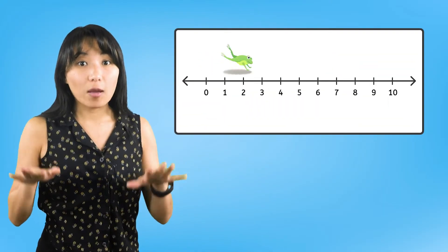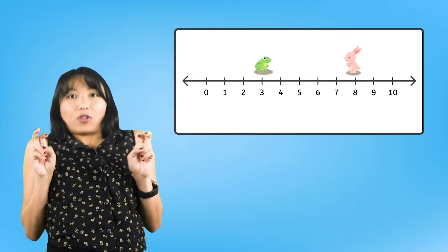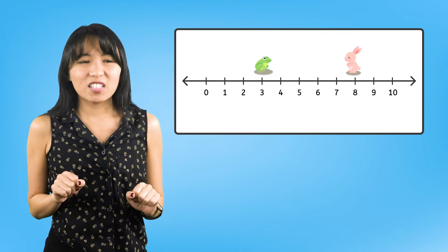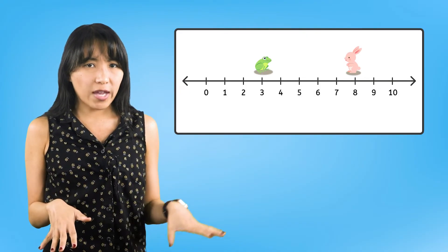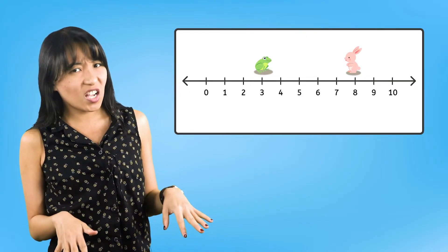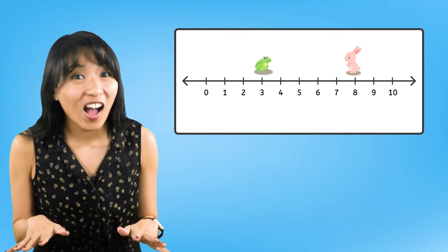Hey there, friend! We are visiting Number Land today to learn more about our friends, Forward Frog and Backward Bunny. We know that frog hops forward on the number line and bunny hops backward on the number line. But I'm not sure exactly how far they're hopping each time. Let's take a look at Forward Frog first.